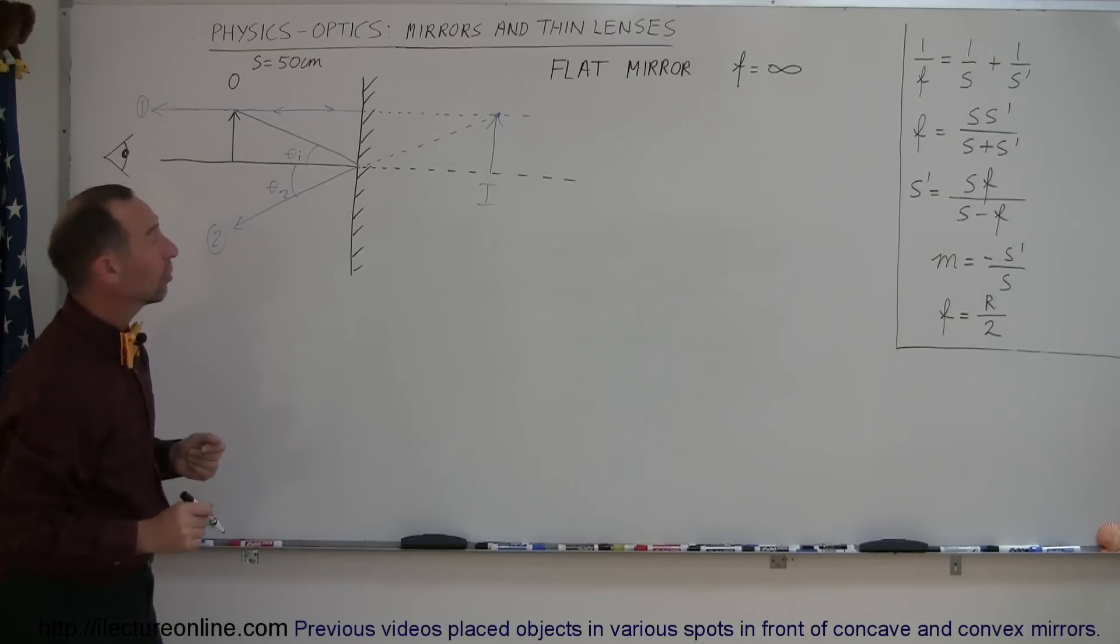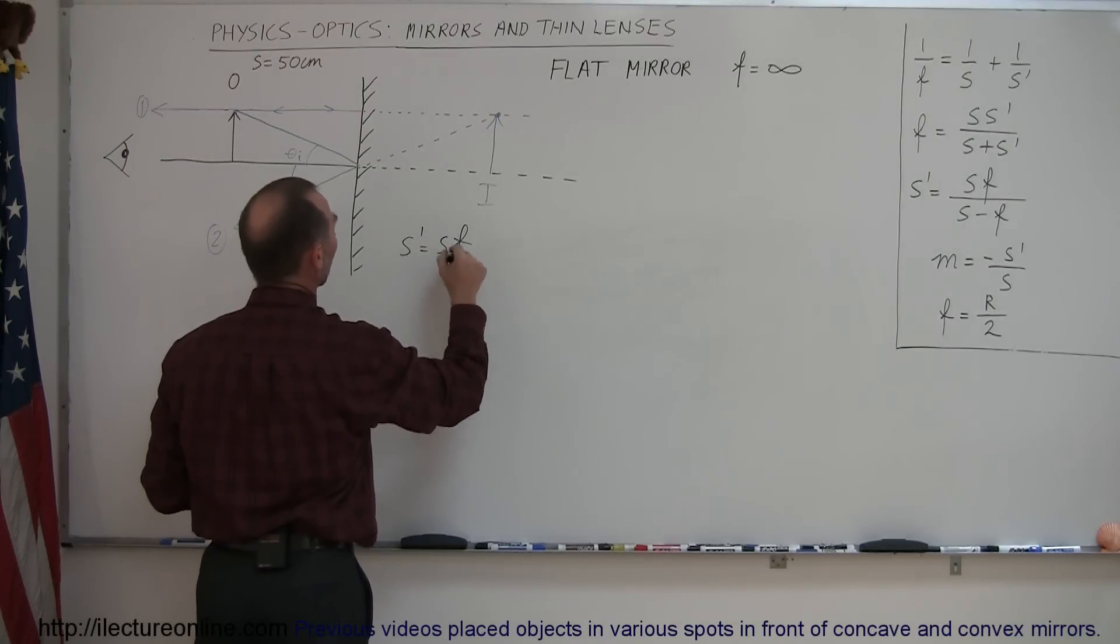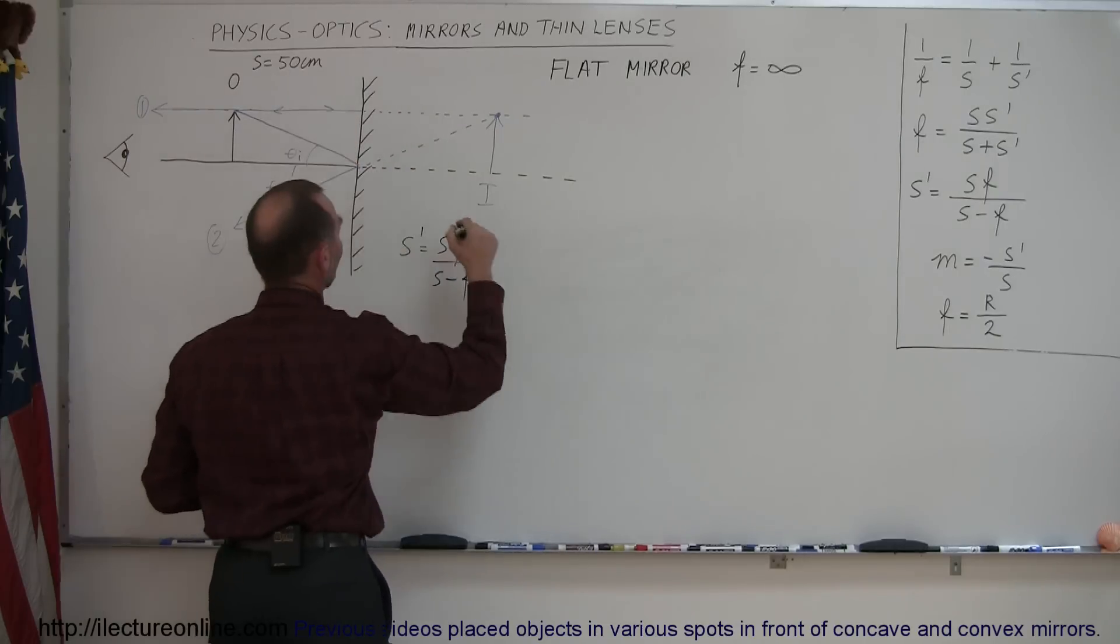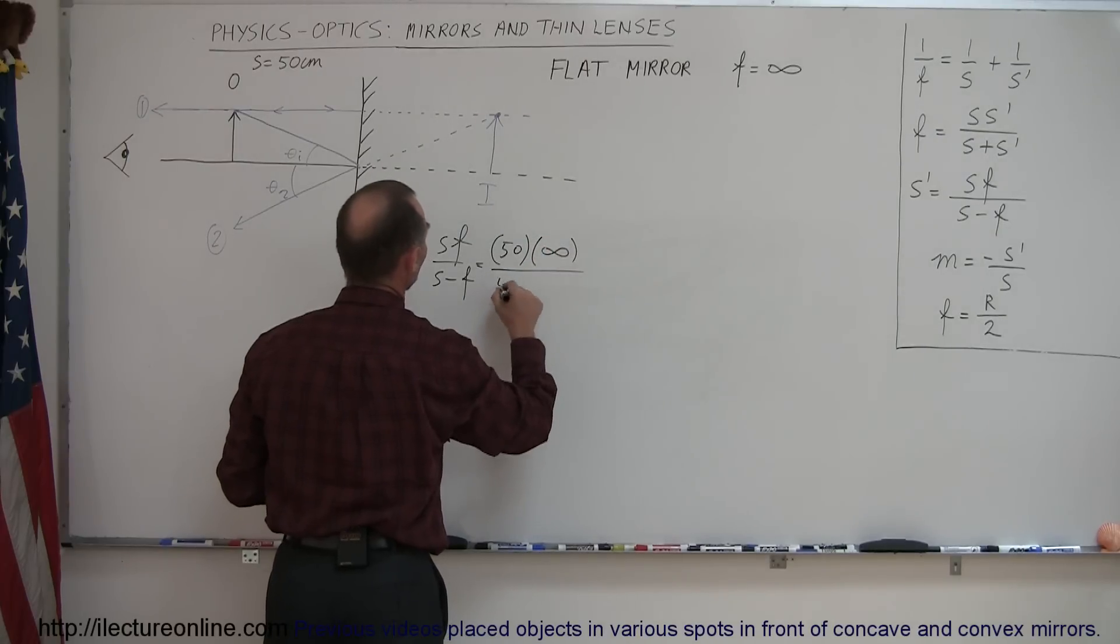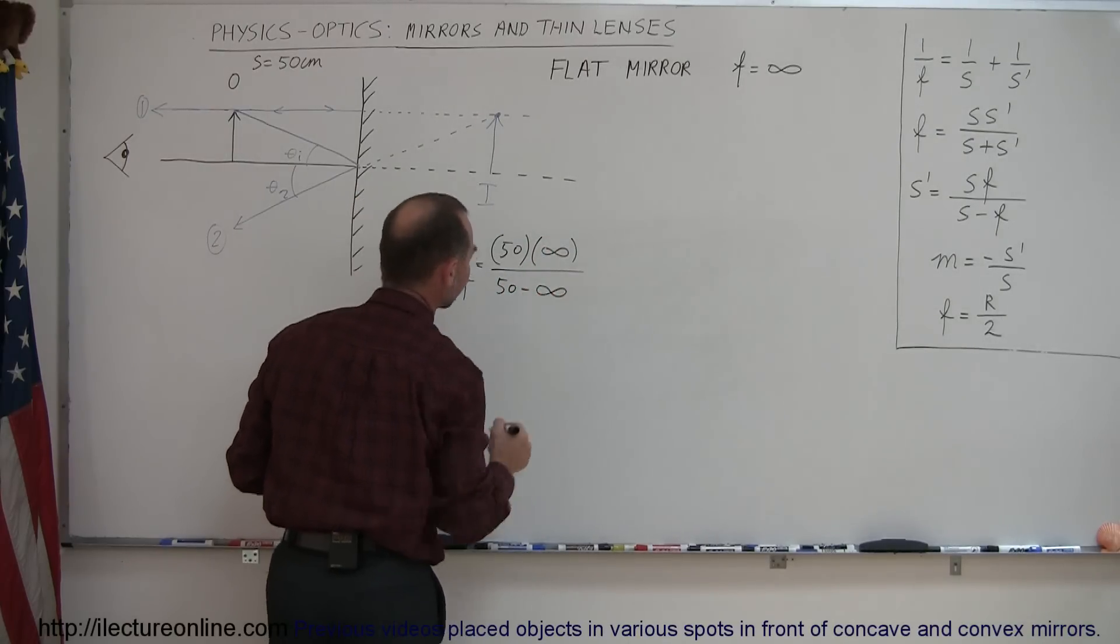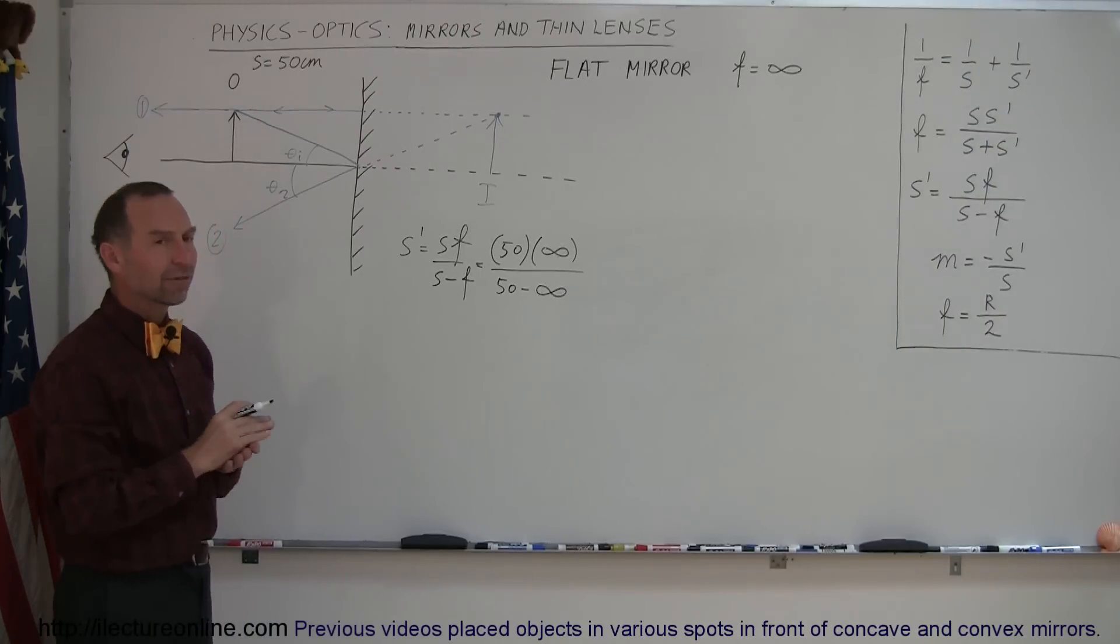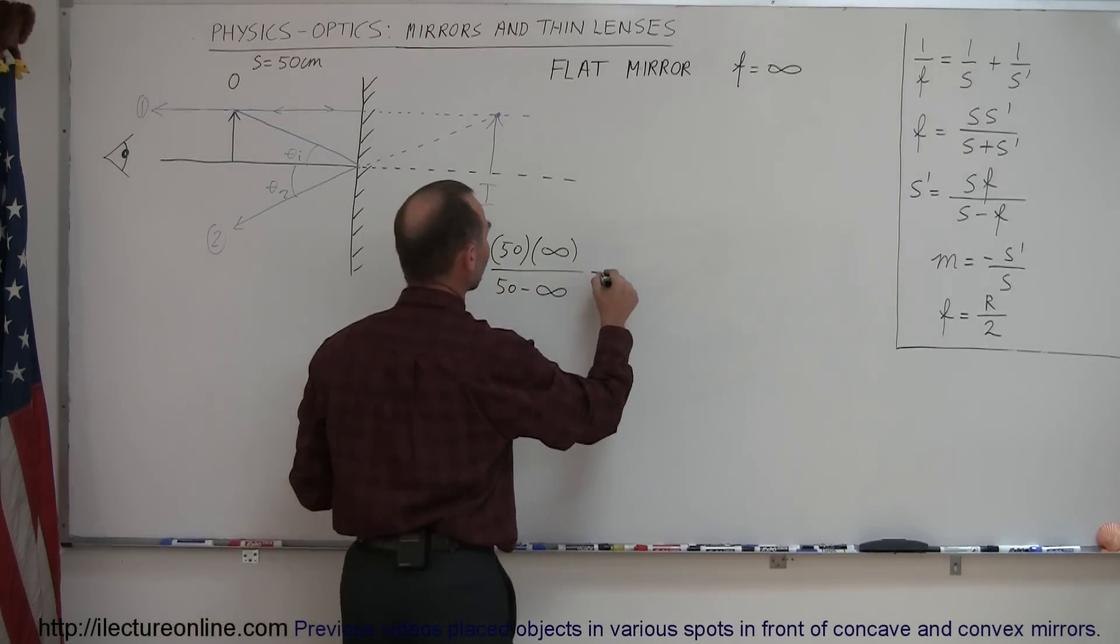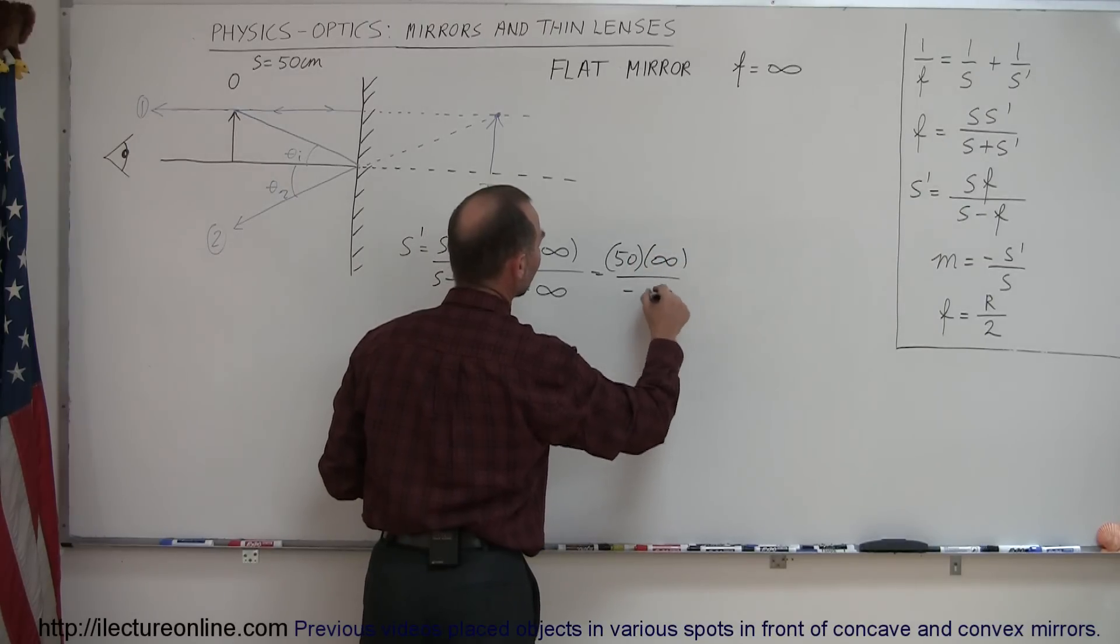All right, let's find the distance to the image. We use the equation S' is equal to SF over S minus F, and, of course, the object distance S was 50 centimeters. Now, the focal length in this case is infinity divided by 50 minus infinity. Okay, if we look now at the denominator, 50 minus infinity, this 50 becomes insignificant, so we can simply leave that off and write this as 50 times infinity divided by minus infinity.